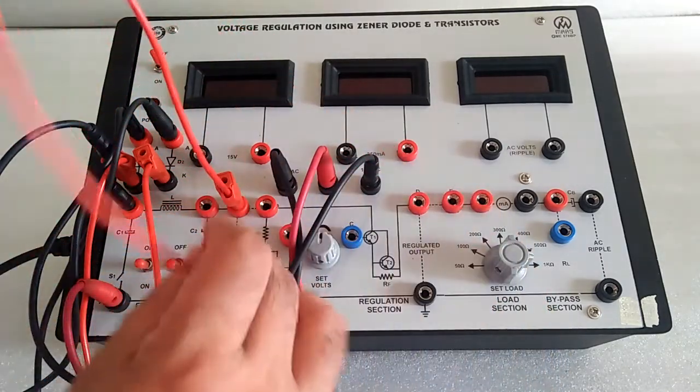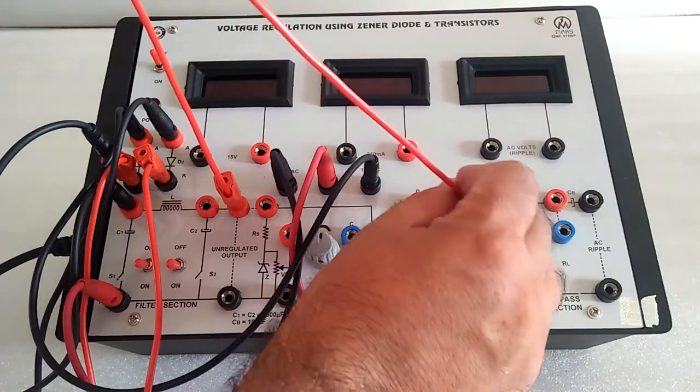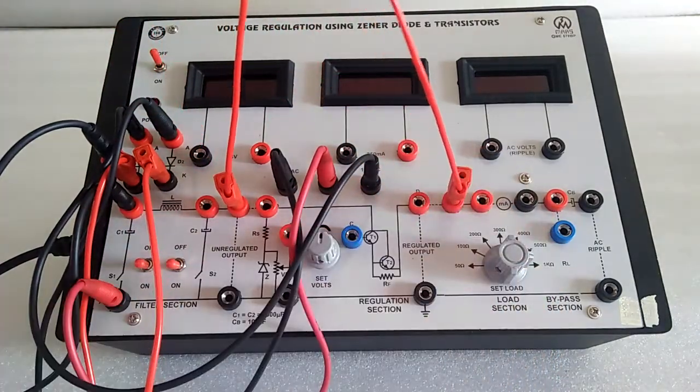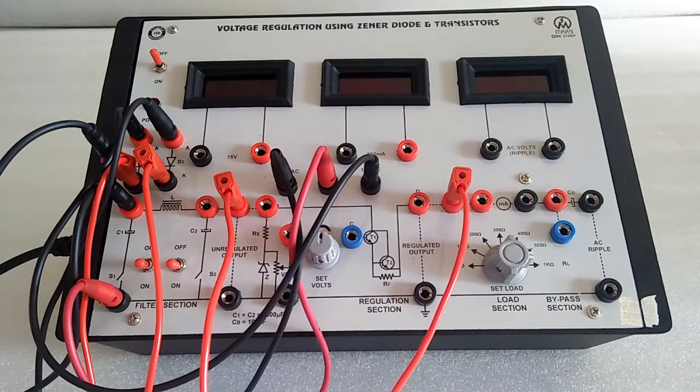So we bypass the circuit and connect directly to E over here with the current meter.